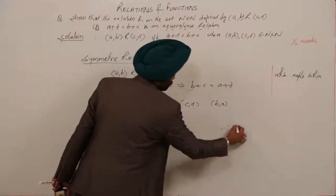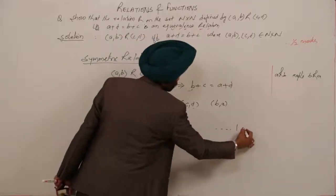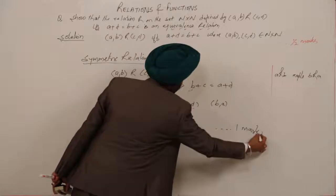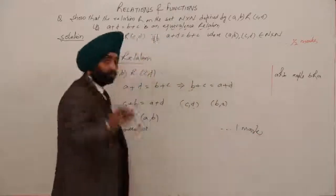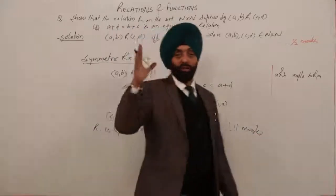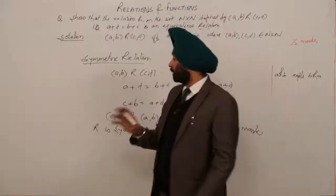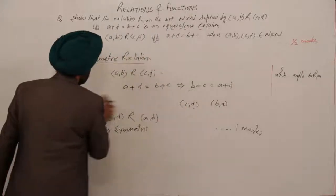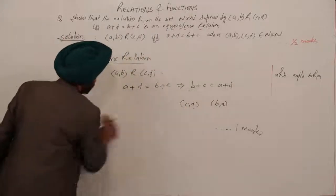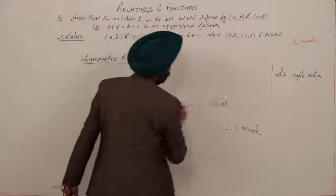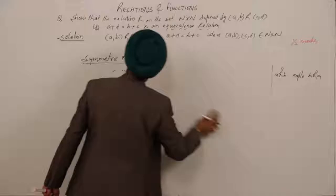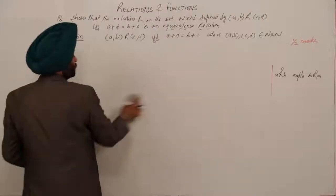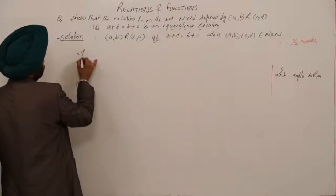Again, you will be awarded one mark for this. So total we are having half in the beginning, one and one. Now let's move with the transitive part — that is the third part.